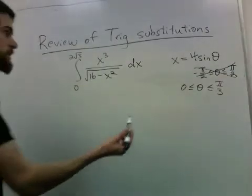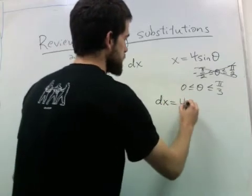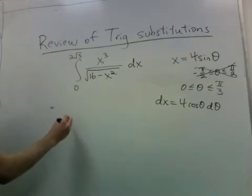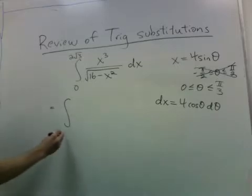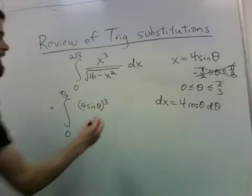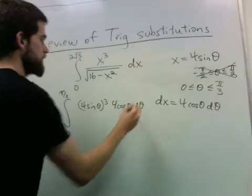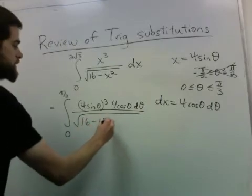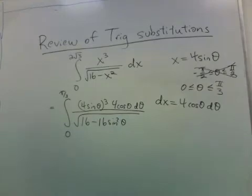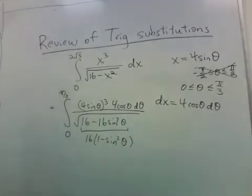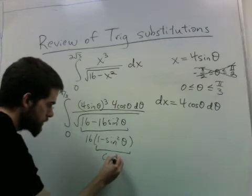Now proceeding with the substitution, we take the derivative of this. We get dx is 4 cosine theta d theta. And the bottom, we have square root of 16 minus 16 sine squared theta. This part is really just 16 times 1 minus sine squared theta, and this is just cosine squared theta.